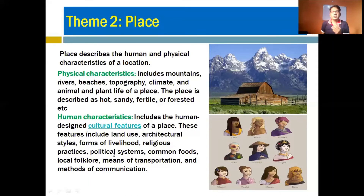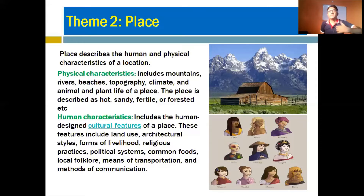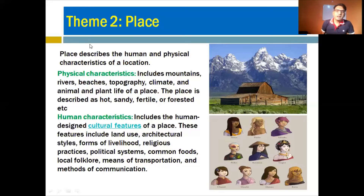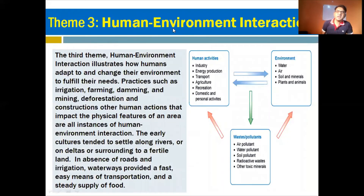Human characteristics include land use, architectural style, forms of livelihood, religious practices, political systems, common foods, local folklore, means of transportation, and methods of communication. You can observe the different forms of architecture, the way buildings are constructed, the way people live, how they earn money, their professions, their beliefs, the languages they speak, and their food culture. In a place, you see both physical and human characteristics.